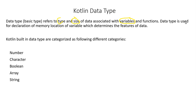The data type is used for declaration of a memory location of a variable, which determines the features of a data. So when we create or declare a variable, we create some kind of data type for each.